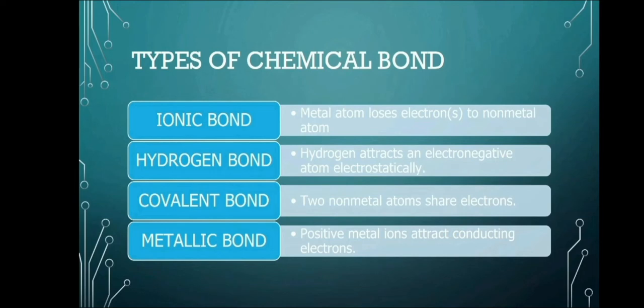So, there are several types of chemical bonds. The first is ionic bond, which happens when metal atom loses electrons to non-metal atom. Then we have hydrogen bond where hydrogen attracts an electronegative atom electrostatically. Covalent bond is when two non-metal atoms share electrons. And then we have metallic bond wherein positive metal ions attract conducting electrons.